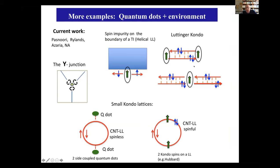I want to advertise other systems we are working on. A Kondo model with two impurities is again a very rich system — new phases and topological modes arise from correlations between the two spins. There is also the Y-junction problem where several Luttinger liquids are coupled at one point. We are also interested in what happens to an impurity in a helical Luttinger liquid at the edge of a two-dimensional superconductor, or in a small Kondo lattice ring and the magnetic correlations arising from electron exchange.